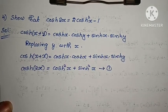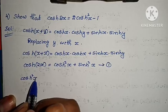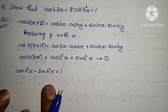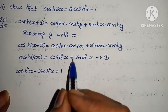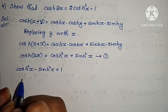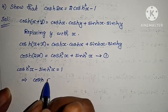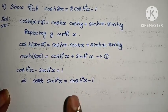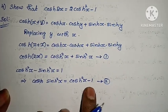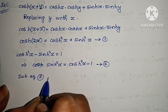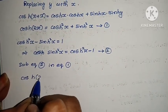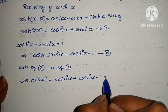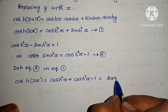Now use the hyperbolic identity: cosh²(x) − sinh²(x) = 1, therefore sinh²(x) = cosh²(x) − 1. Substituting this into equation 1: cosh(2x) = cosh²(x) + sinh²(x) = cosh²(x) + (cosh²(x) − 1) = 2cosh²(x) − 1.